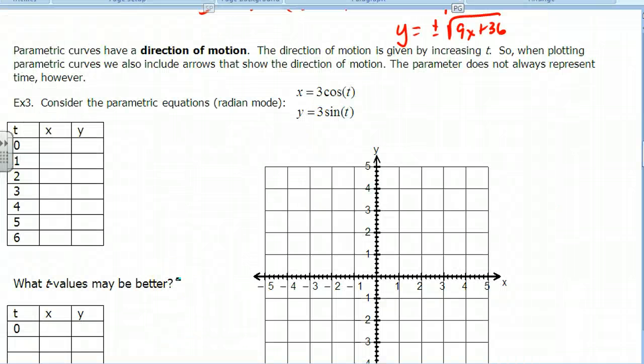Okay, let's go back to the notes then. So with this example, we have, well, let's read this first. Parametric curves have a direction of motion. So what happens is that your t is like ticking, tick, tick, tick, tick, tick. And for each tick, I'm going to get a new x and y coordinate respectively. And so I plot those new coordinates. So we usually deal with arrows.